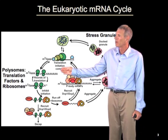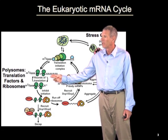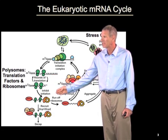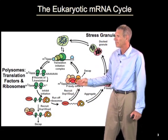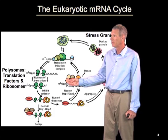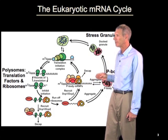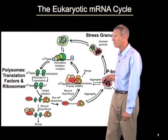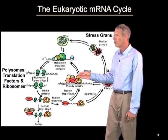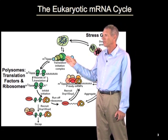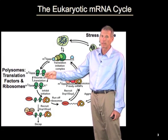First, mRNAs can exist in a translating state, where they are associated with ribosomes making proteins. But under certain conditions, they can exit that state, lose their translation factors and ribosomes, and assemble what we call a p-body mRNA — a translationally repressed mRNA which can aggregate into these larger p-bodies. mRNAs within p-bodies can either be destroyed, or they can return to translation by assembly of a new translation initiation complex and recruitment of ribosomes.